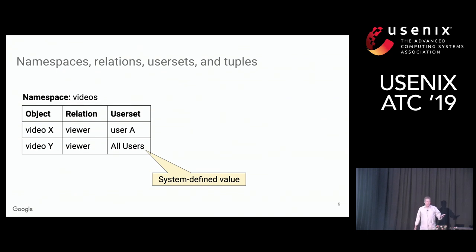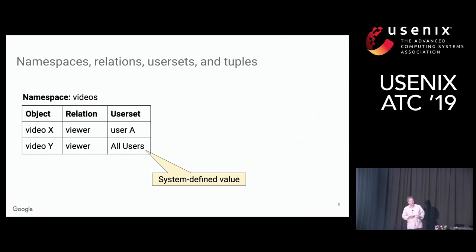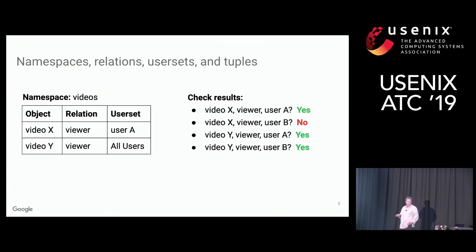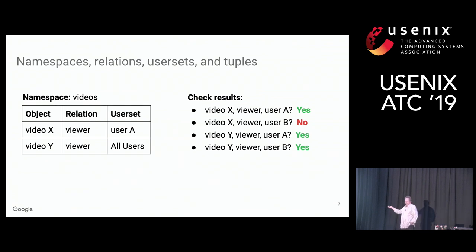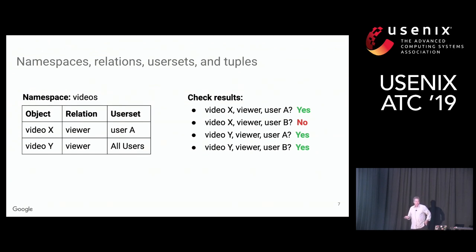Here we have two examples. The first states that user A is a viewer of video X. The second states that all users are viewers of video Y — 'all users' is a system constant used to implement public objects. When checking authorizations, Zanzibar reads stored relation tuples and evaluates the check. Is user A a viewer of video X? Yes. User B? No — B does not appear in the ACL. Since video Y is public, all users are viewers, so the answer is always yes.